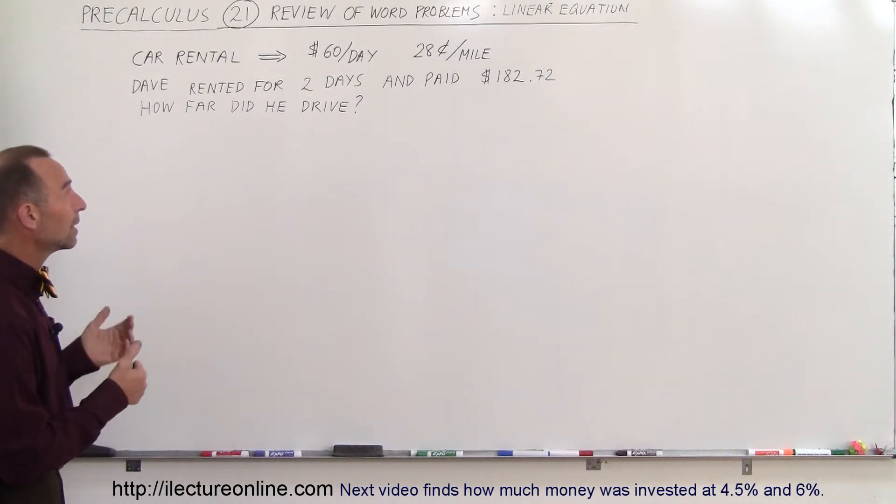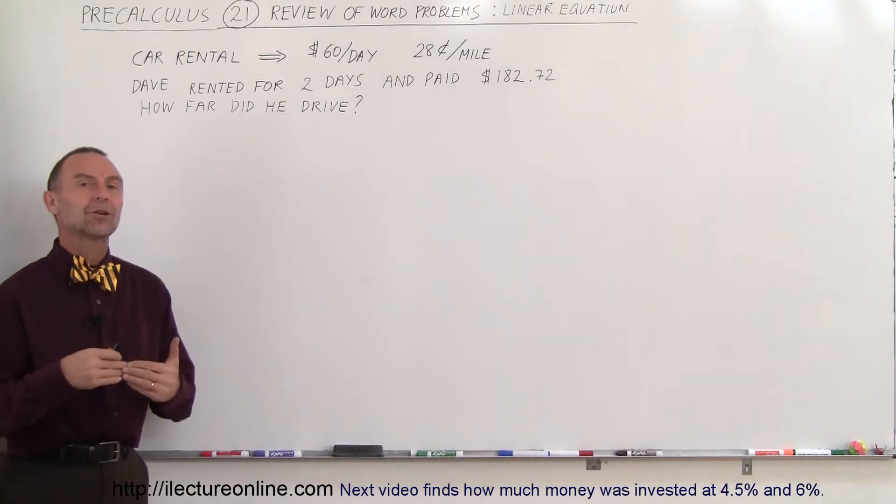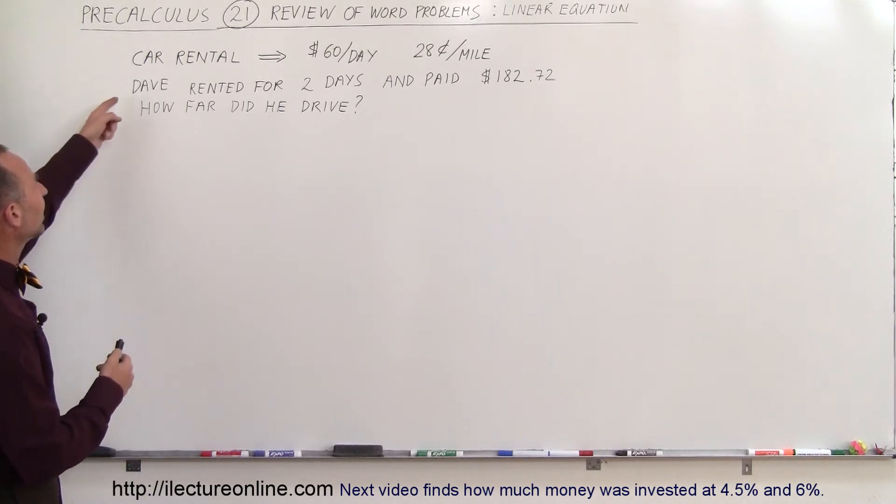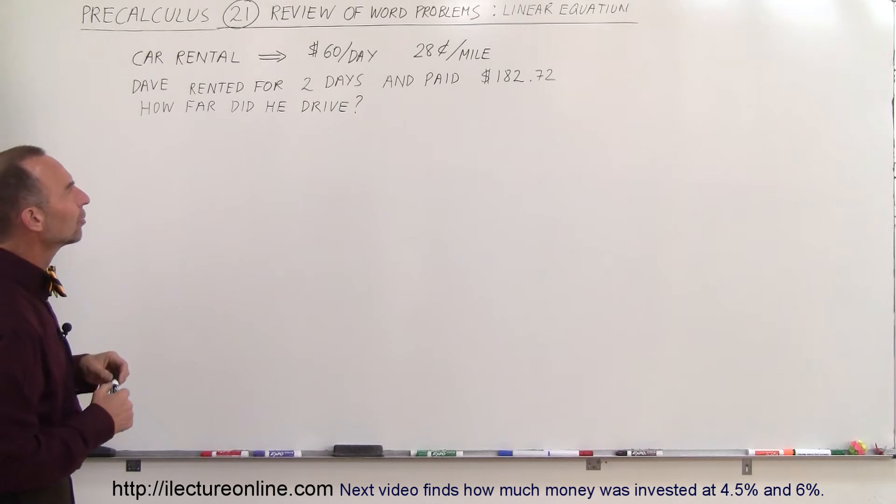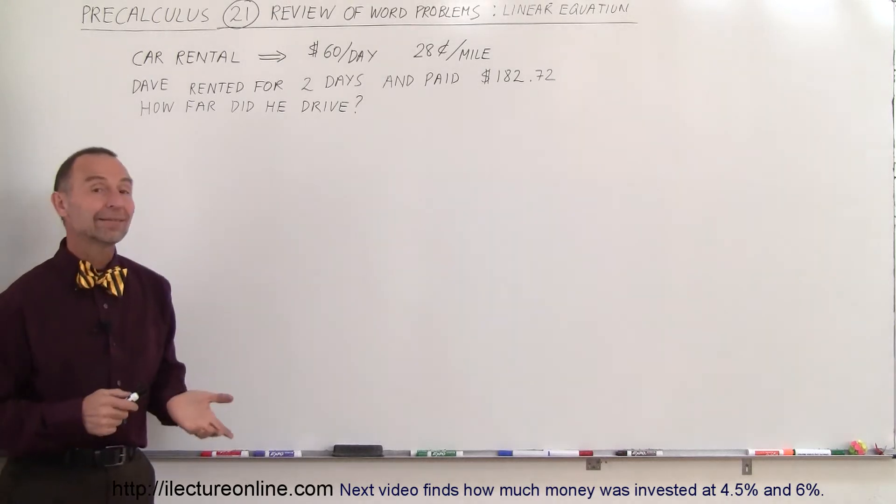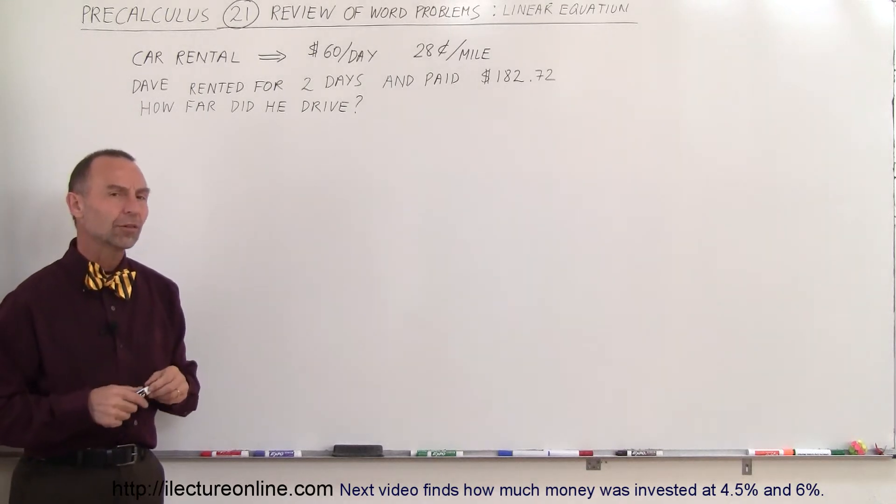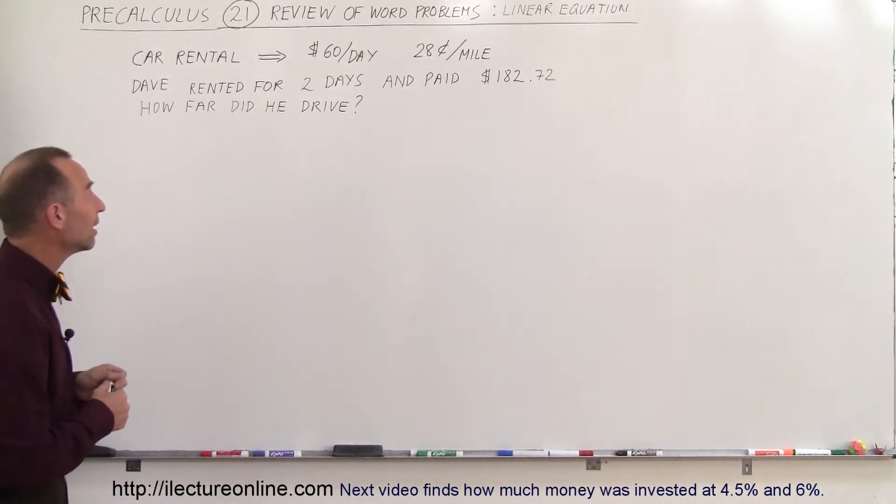So our first one here is going to be relative to setting up the linear equation. We're going to do a car rental here. Let's say that Dave rents a car at $60 a day and it costs $0.28 per mile. He rents the car for two days and he pays $182.72. Question is, how far did Dave drive?